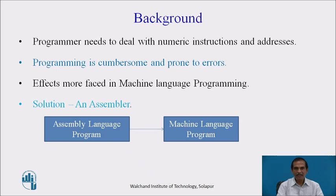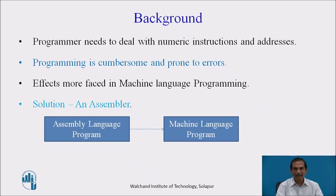Let us see the background which is required for understanding an assembler as a language processor. A programmer needs to deal with numeric instructions and addresses, and therefore has to deal with lots of zeros and ones. So programming is cumbersome and prone to errors, and the main effects are faced in machine language programming. Therefore we deal with a solution which is an assembler.